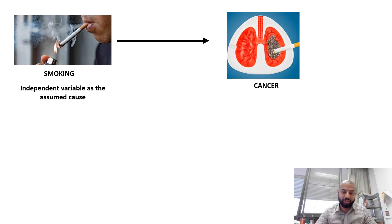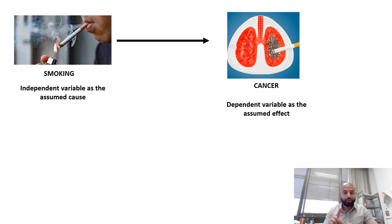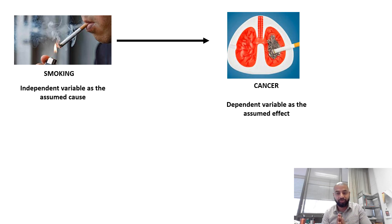Cancer here becomes the dependent variable — the assumed effect of smoking. Again I use the word 'assumed' because we have not yet proved that cancer is caused by smoking. A dependent variable is a variable whose variation can change due to the effect of other variables — whether the independent variable or external variables. I will also talk about another type called the intervening variable in my next video, but for now let's focus on independent, dependent, and extraneous variables.